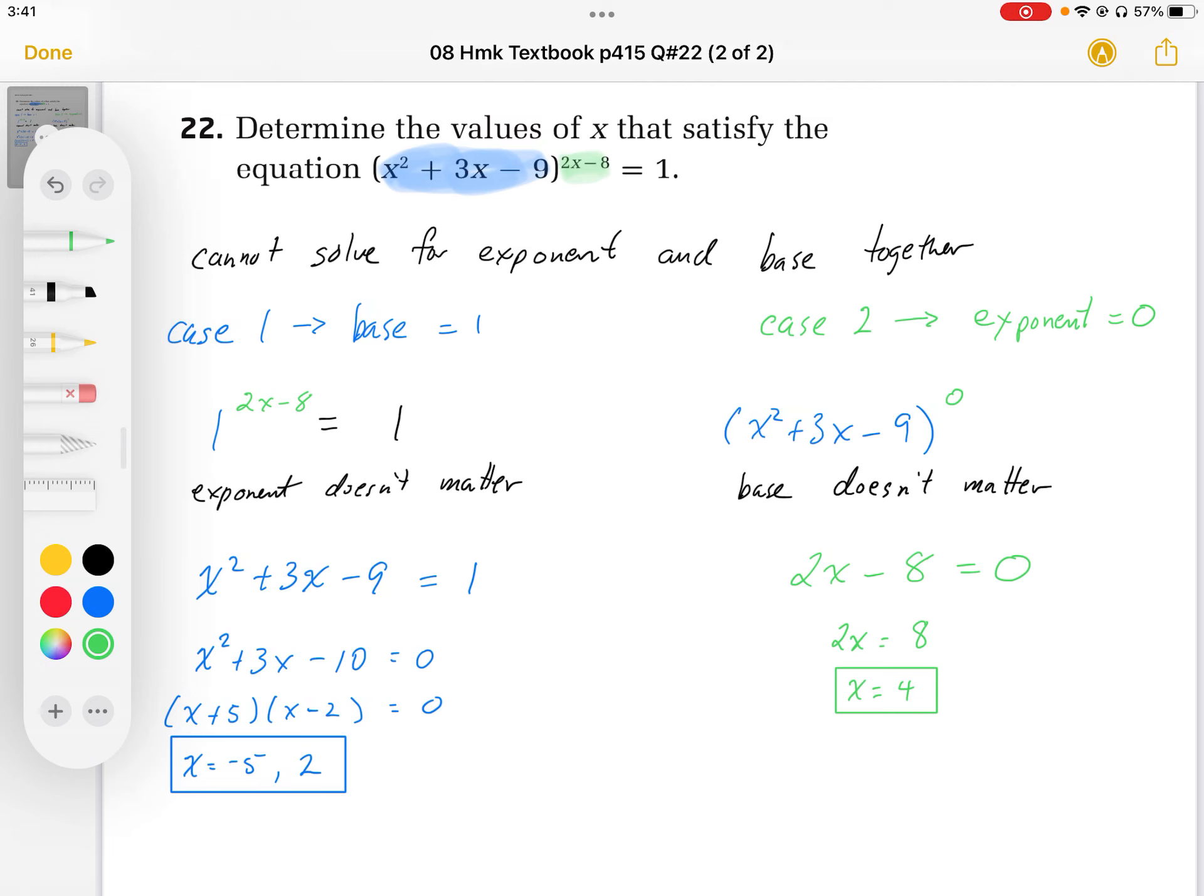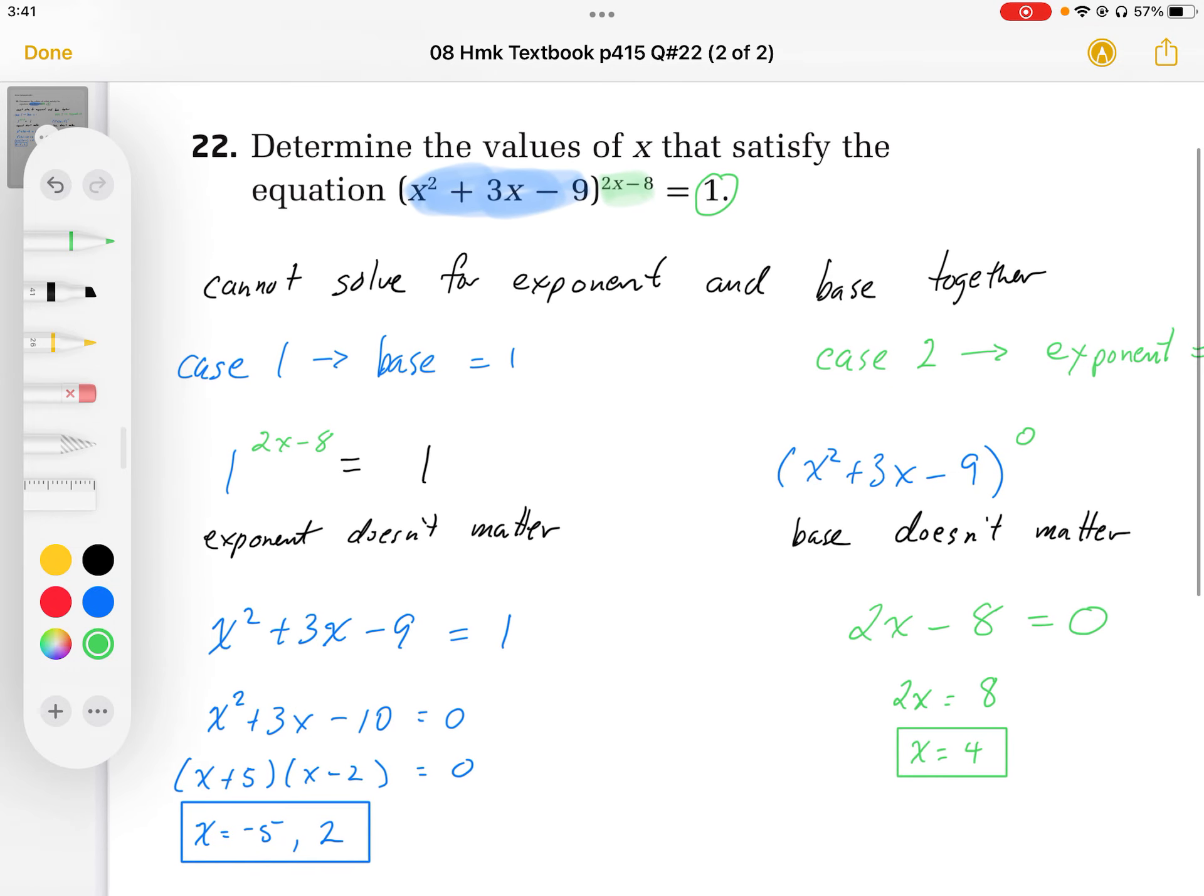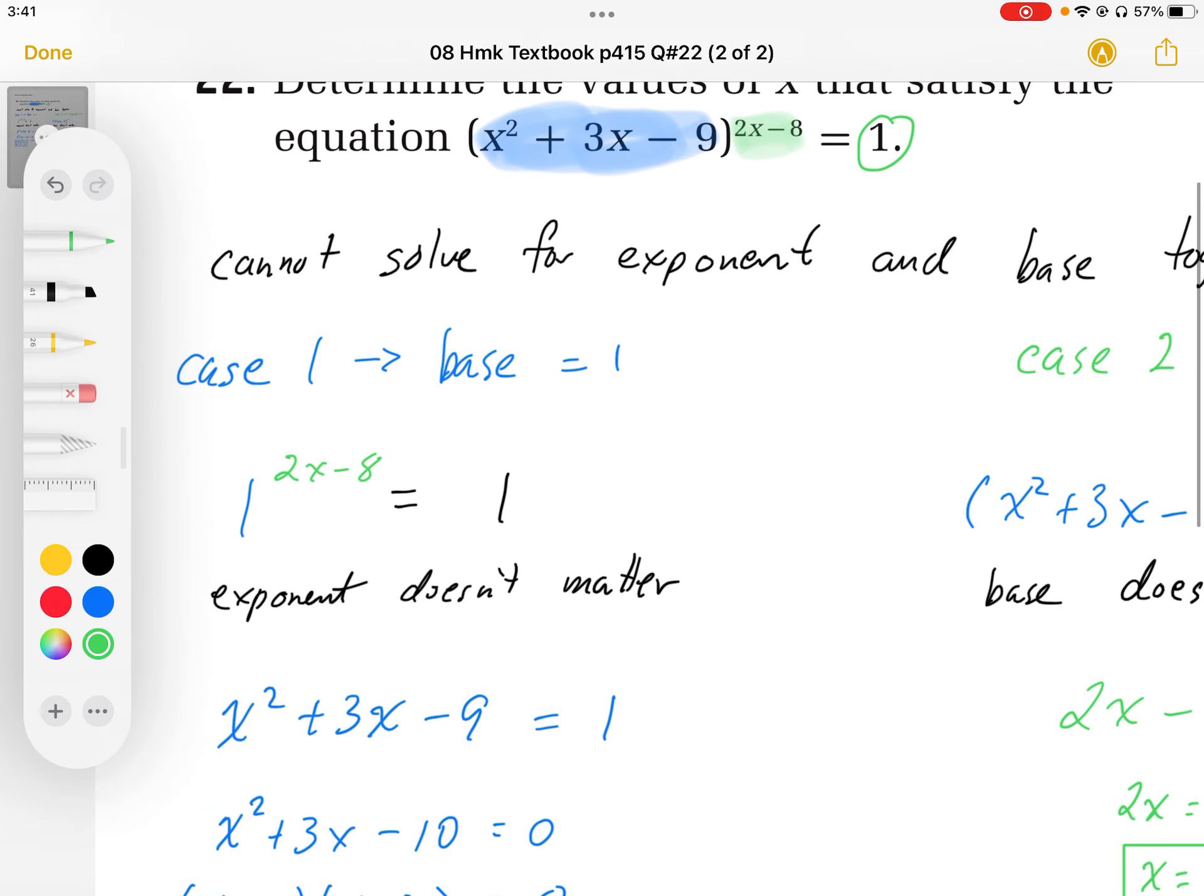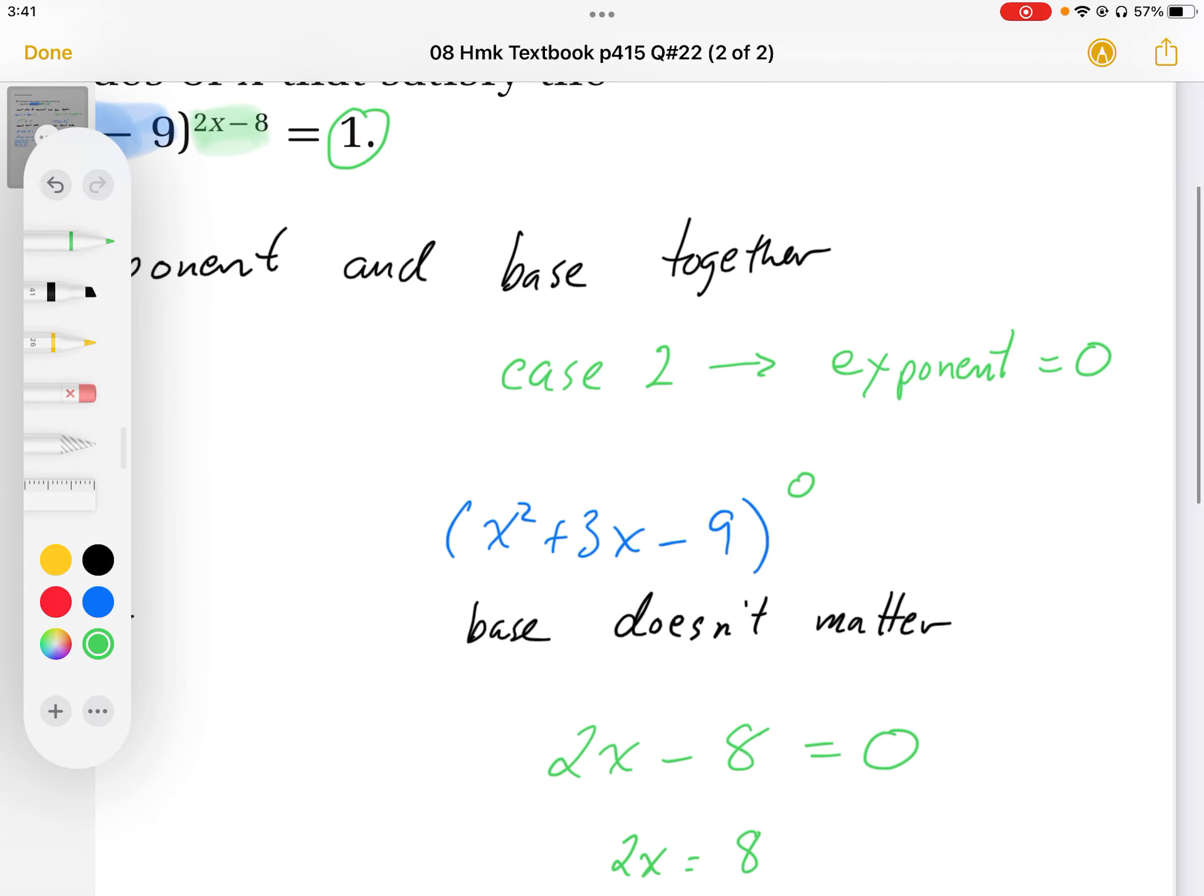This only works because it equals 1. If it equaled something else, we wouldn't be able to make an argument for the base and exponent. But because it's equal to 1, we can make an argument for the base equal to 1 and the exponent equal to 0.